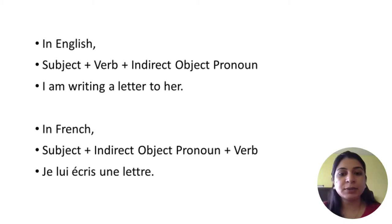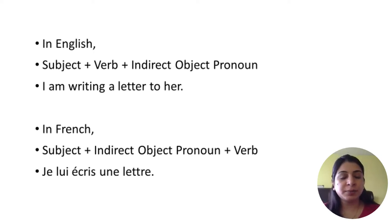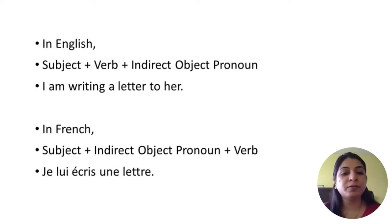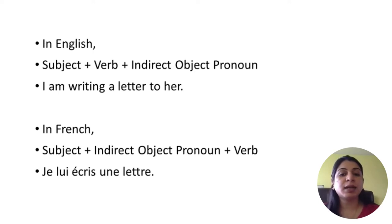In English the structure is subject + verb + indirect object pronoun: 'I am writing a letter to her.' In French it is subject + indirect object pronoun + verb: 'Je lui écris une lettre.' Here 'je' is the subject, 'lui' is the indirect object pronoun placed before the verb 'écris', and 'lettre' is the object.